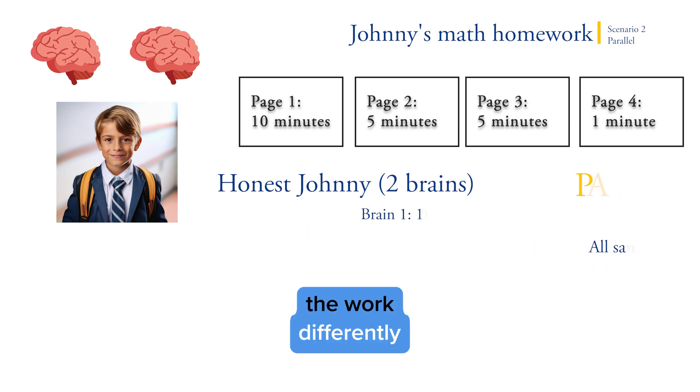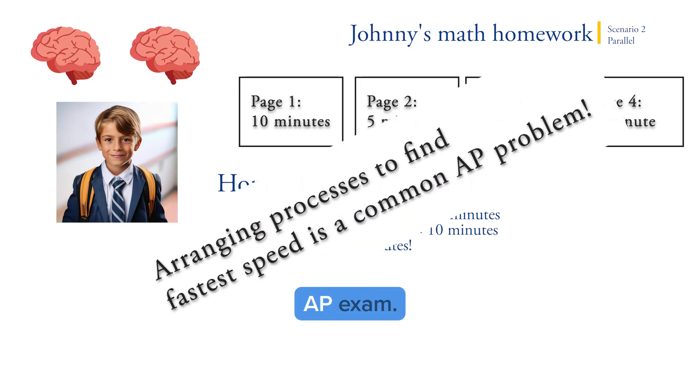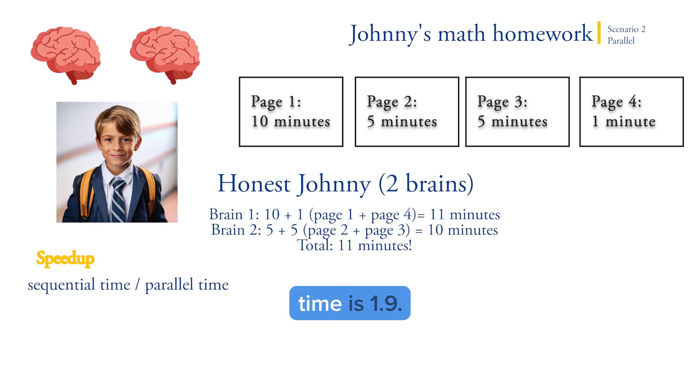I could have also arranged the work differently and had brain one run pages one and four, and had brain two run pages two and three. This will give me a new runtime of 11 minutes, which is faster than my other time of 15 minutes. This arranging of tasks on different computers is a common question that shows up on the AP exam, so you'll want to know how to do this. The speed up, which is defined by the AP board as the sequential time divided by the parallel time, is 1.9. And that's another term you'll need to know for the exam. A higher speed up is going to be better.